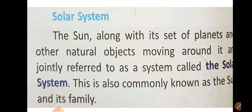Now we will read about the solar system. The sun along with its set of planets and other natural objects moving around it are jointly referred to as a system called the solar system. It is commonly known as the sun and its family — the sun and all the celestial bodies which are revolving around it.